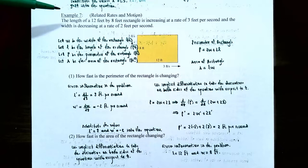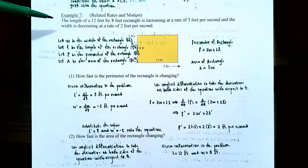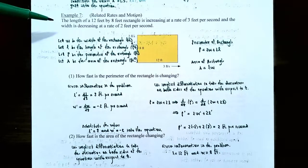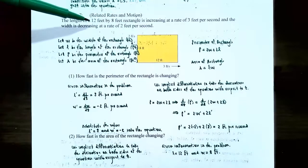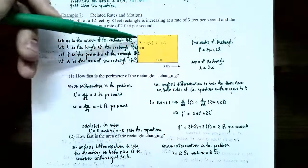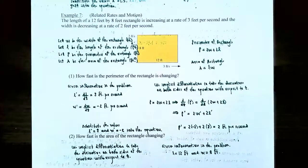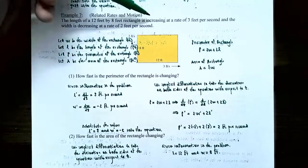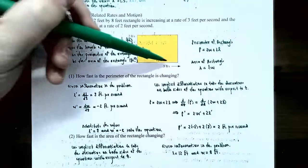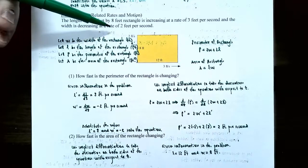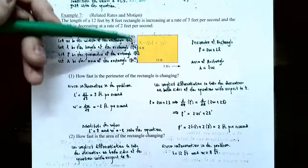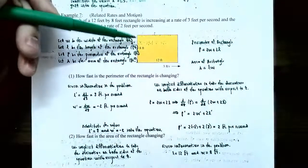Let's try example 7: related rates and motion, this time involving a rectangle. The length of a 12-foot by 8-foot rectangle is increasing at a rate of 3 feet per second, and the width is decreasing at a rate of 2 feet per second. The length is getting longer at 3 feet per second, while the width is decreasing, so the rectangle is getting wider but shorter.